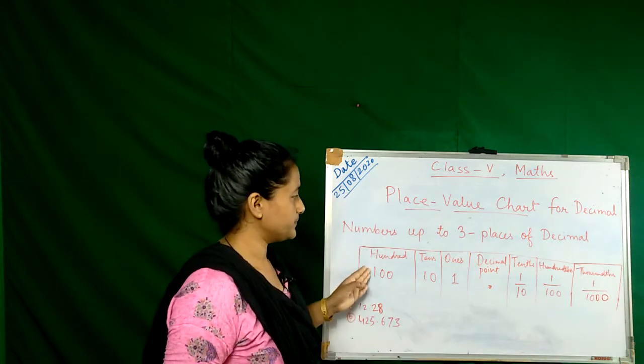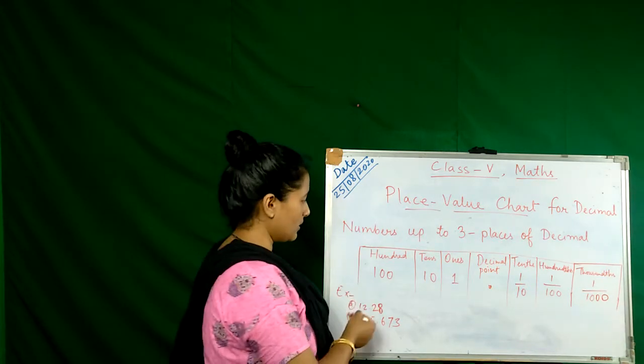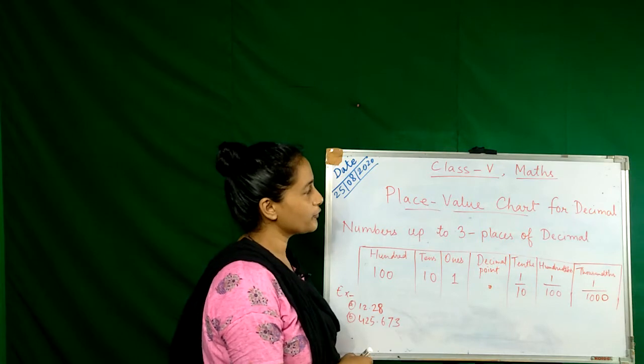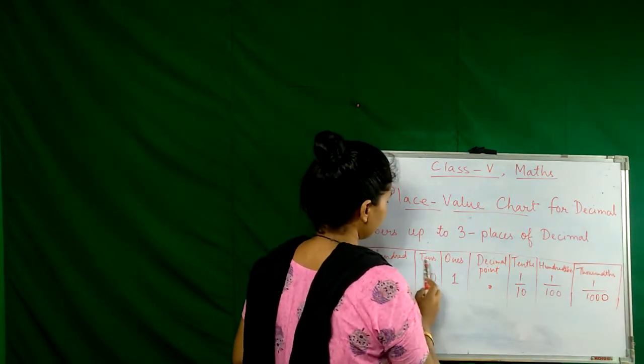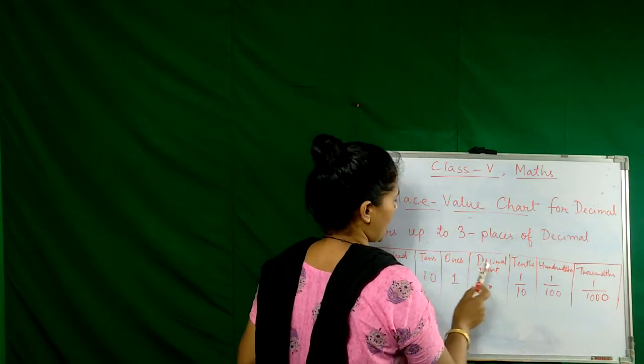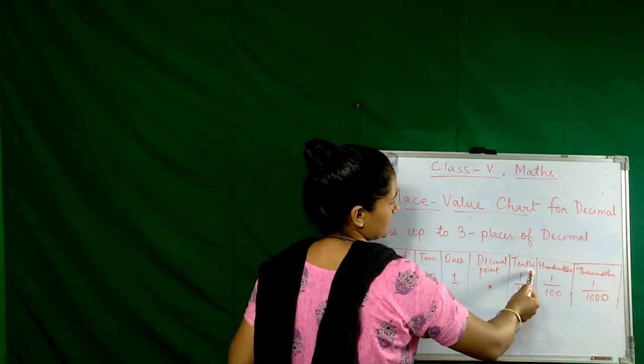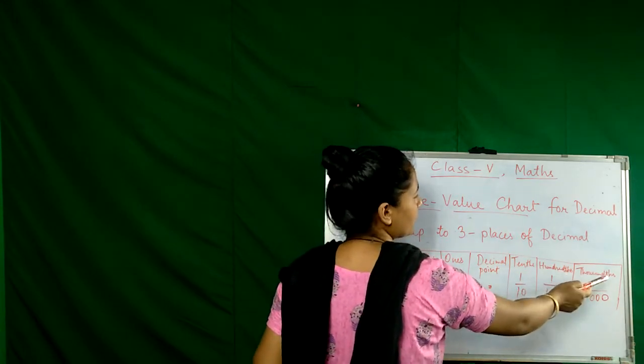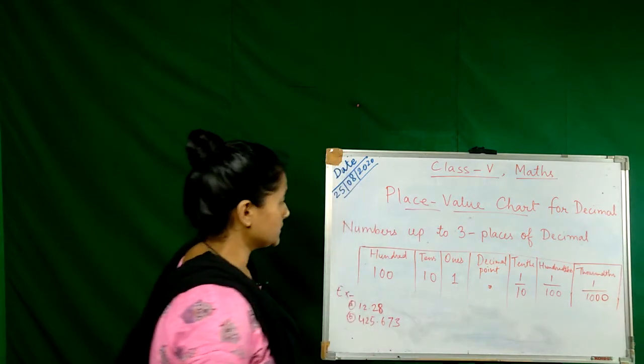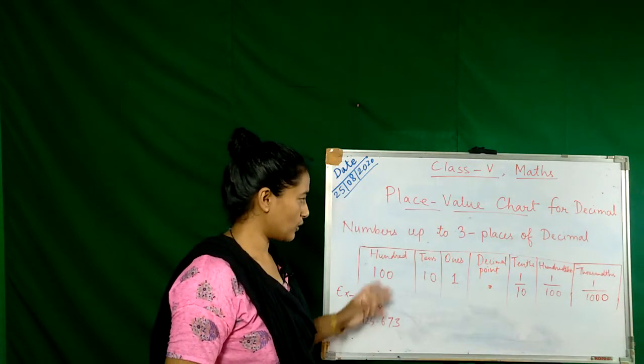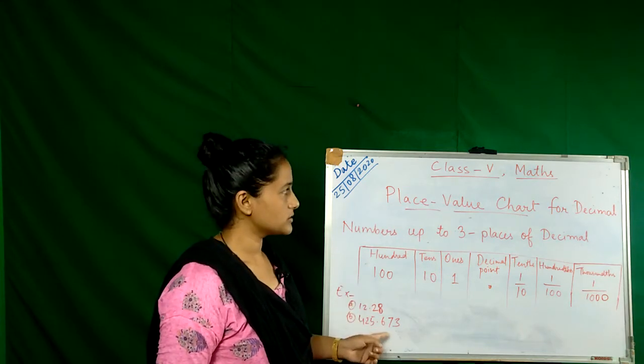This is the process for how to solve place value with decimals. This chart has hundred, tens, ones, decimal point, tenth, hundredth, thousandth. Here is one example of how to solve with decimal place value.